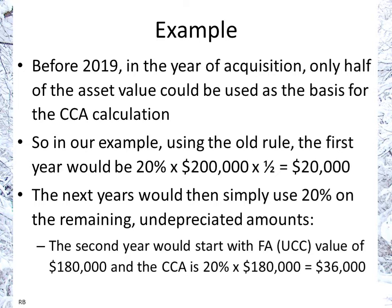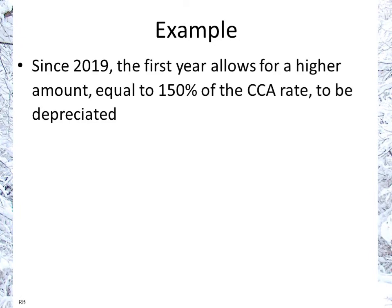Under the old half-year rule, the first year would be 20% times $200,000 times one-half. So $200,000 times half equals $100,000, and 20% on $100,000 gives a CCA of $20,000. The remaining undepreciated value would be $200,000 minus $20,000, leaving $180,000. The next year: 20% times $180,000 equals $36,000. The year after: undepreciated capital cost is $180,000 minus $36,000 equals $144,000, so 20% on $144,000, and so on.